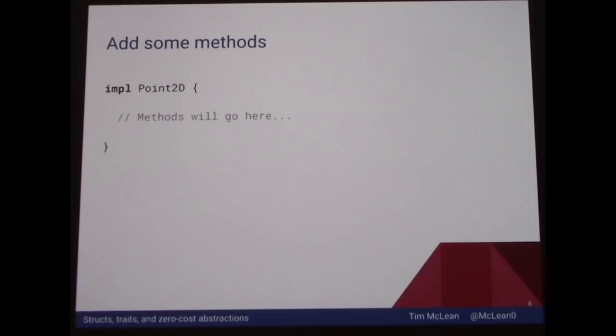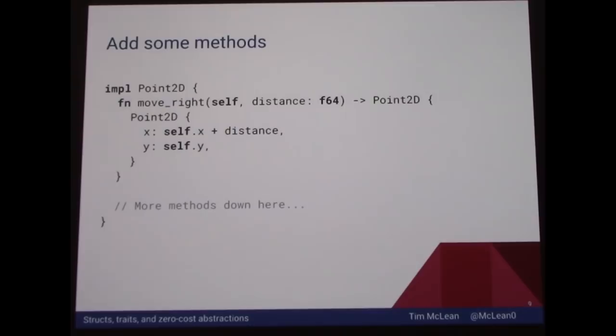Let's add some methods. In Rust, you use an impl block to add methods to a struct, so we say impl Point2D and now we can add a method. This is a contrived example, but we'll have a method called move_right, which moves the point to the right by adding to the x value. One note if you haven't looked at Rust before: Rust has an implicit return statement — the last statement in a function body is automatically returned, assuming there's no semicolon. It's kind of weird, but you get used to it.